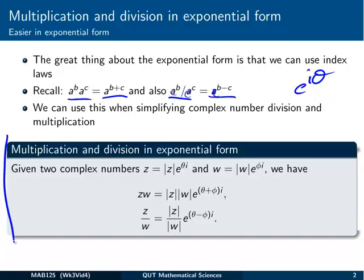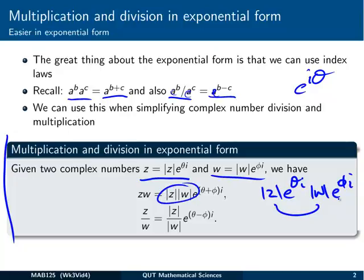Down here in the box at the bottom, there's some rules for that. Given any two complex numbers, let's say they're already written in exponential form, but of course you could always change them to exponential form if they weren't. So we've got z = |z|e^(θi) and w = |w|e^(φi). The idea is we put the two moduli together, and then use the index laws. e^(θi) times e^(φi) becomes e^((θ+φ)i). So we add those indices. And the same happens here with division. When we divide two complex numbers, we divide the moduli and we subtract the two angles.